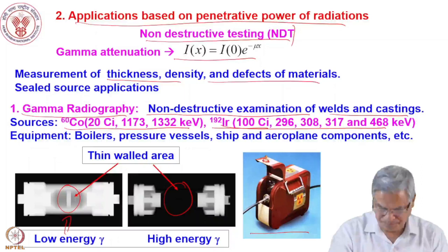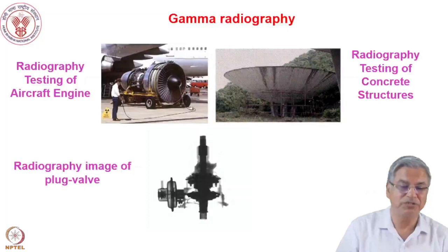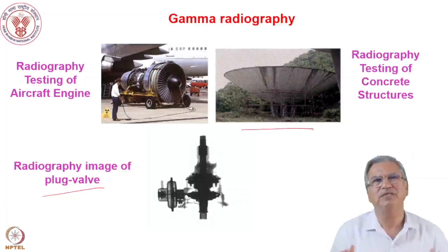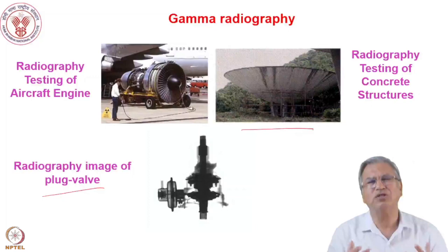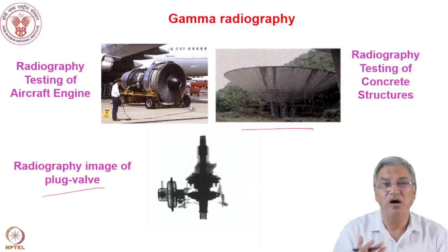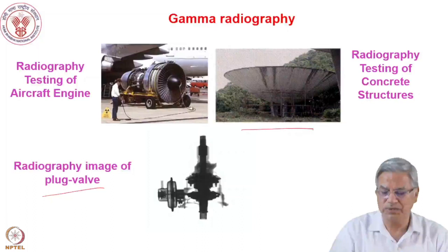Large machines can be radiographed as part of quality control to assure the end user that components meet requirements. For example, in aircraft, the stated probability of accident of one in a billion comes because components have undergone tough tests like gamma radiography. A component with thick and thin parts can be imaged using iridium-192 for thin walls and cobalt-60 for thicker sections, allowing investigation of different sample types.